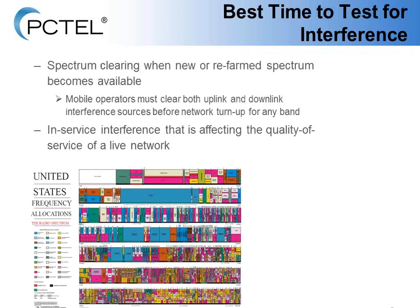When is the best time to test for interference? Really all the time, but there are two major reasons. First is spectrum clearing: when you have new or re-farmed spectrum, you must clear both the uplink and downlink before turning up the network. With the FCC periodically releasing new spectrum, whether you're re-farming from GSM, CDMA, or EVDO, you want to clear up that spectrum again. The other time is in-service interference testing, which affects the quality of service of a live network.